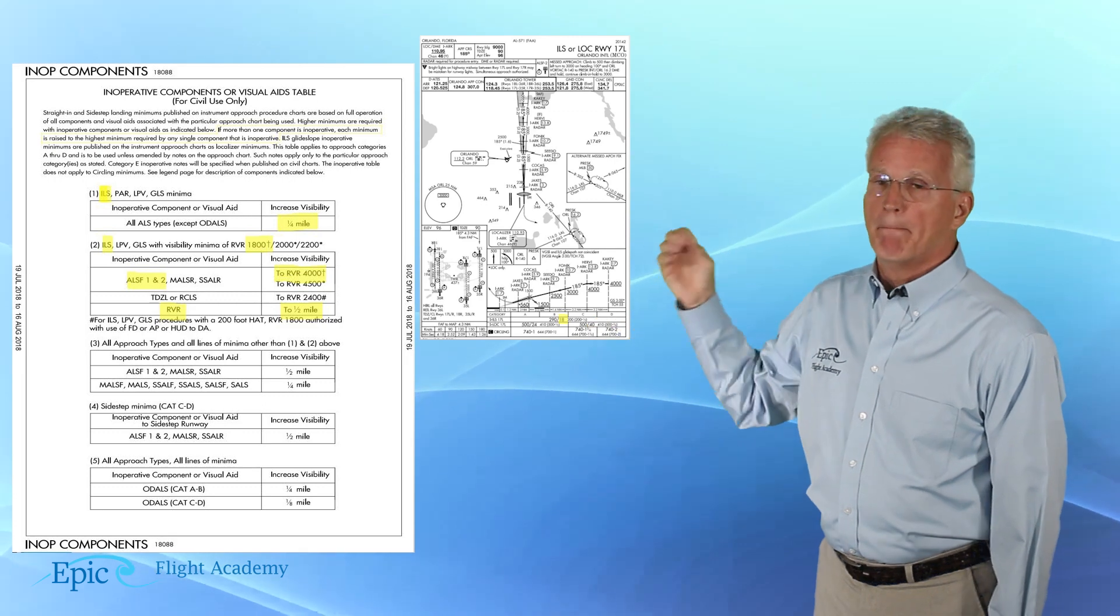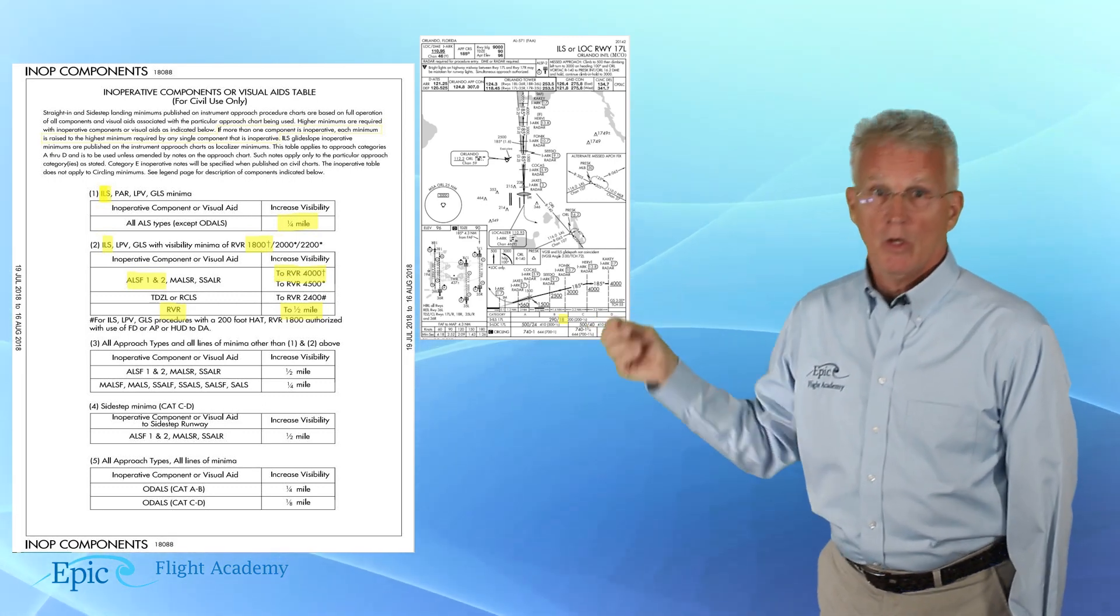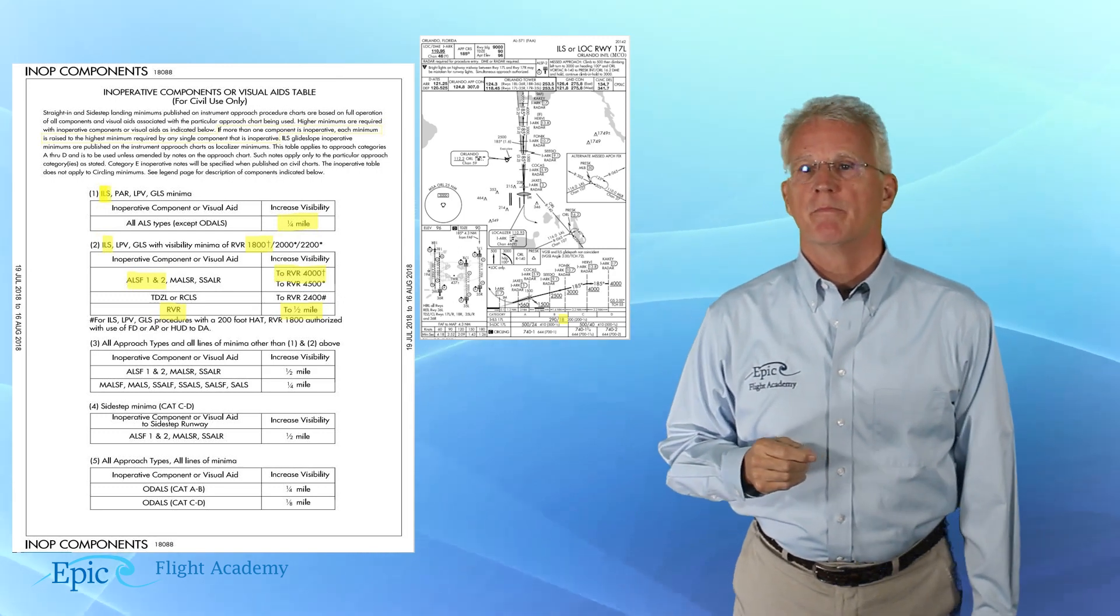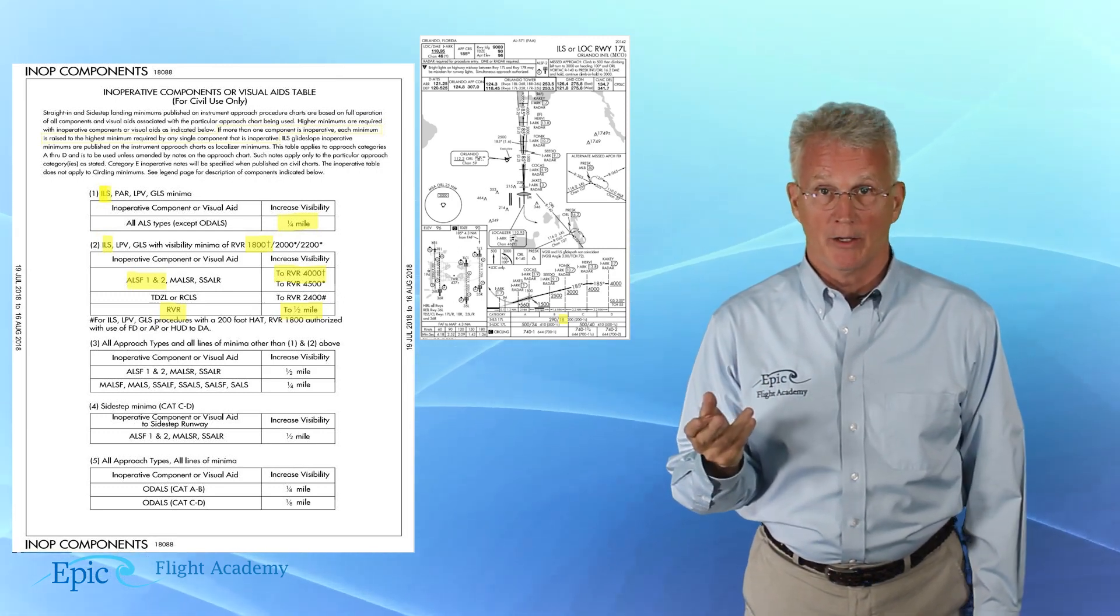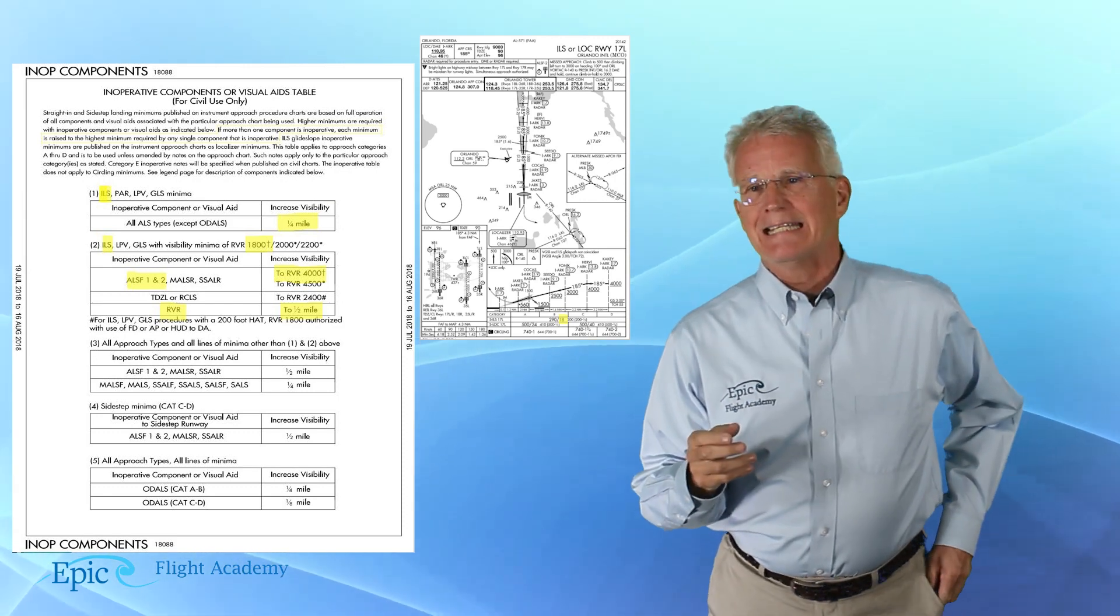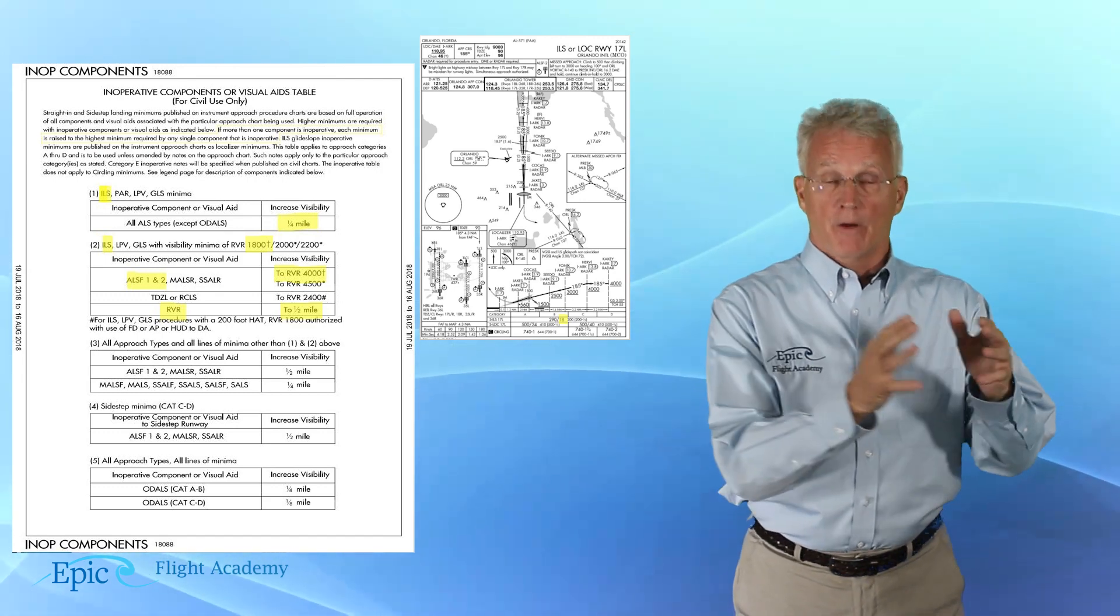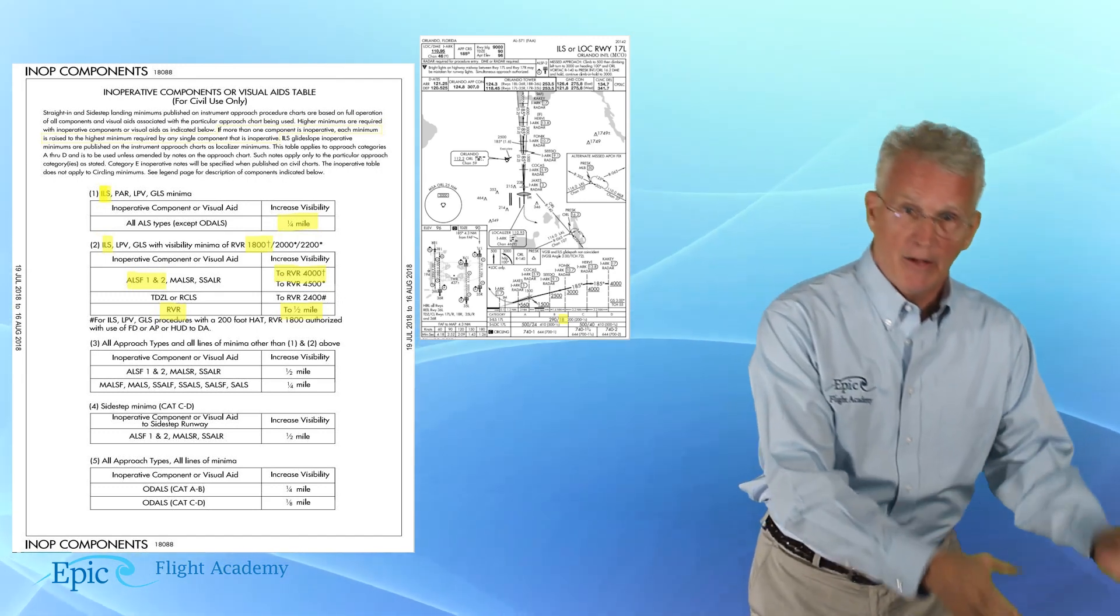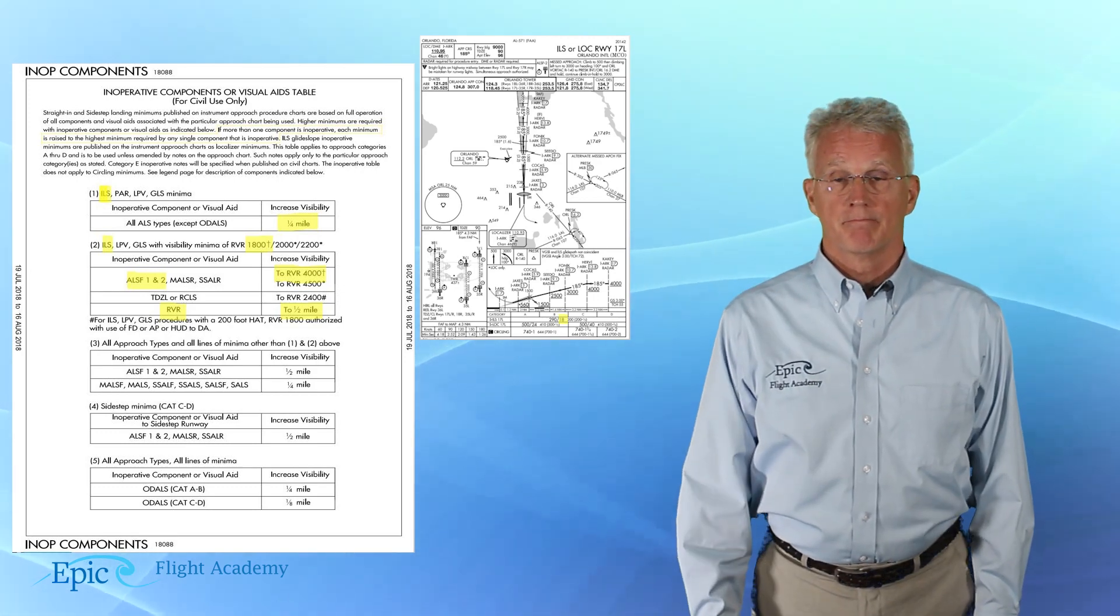If you look at the table, because the RVR is inop, we have to raise the minimum visibility requirements to one half statute mile or 2,400 feet. So, the 1800-foot RVR from my approach chart now has to be increased to 2,400 feet.